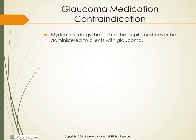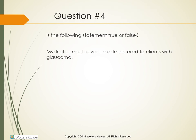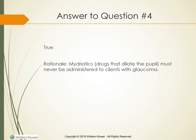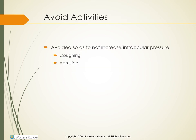Glaucoma Medication Contraindication: Mydriatics, drugs that dilate the pupil, must never be administered to clients with glaucoma. Drugs with anticholinergic properties such as atropine sulfate must be consulted with the physician because they can further obstruct drainage of aqueous fluid. Activities that clients with glaucoma should avoid because they elevate intraocular pressure include coughing and vomiting.